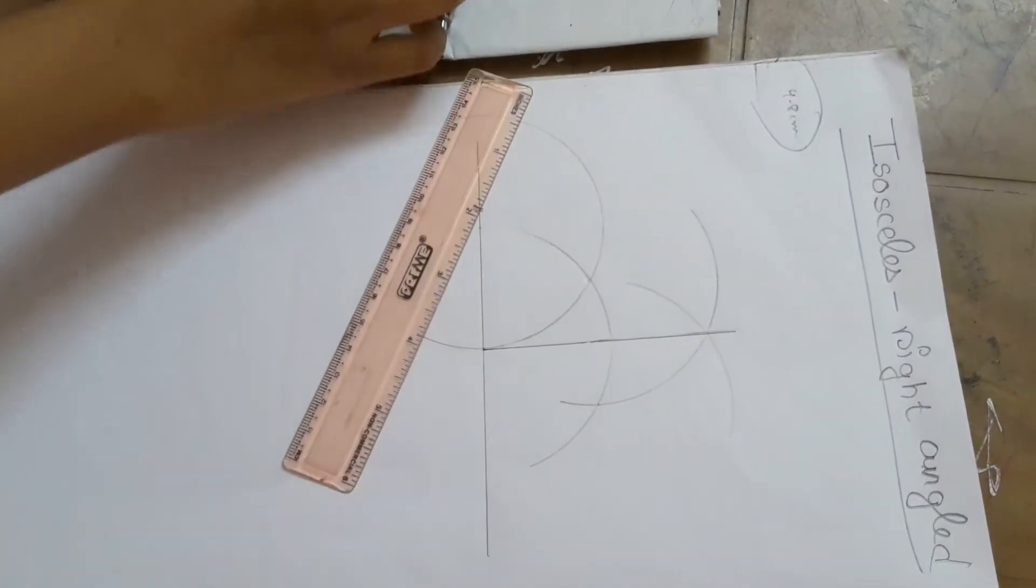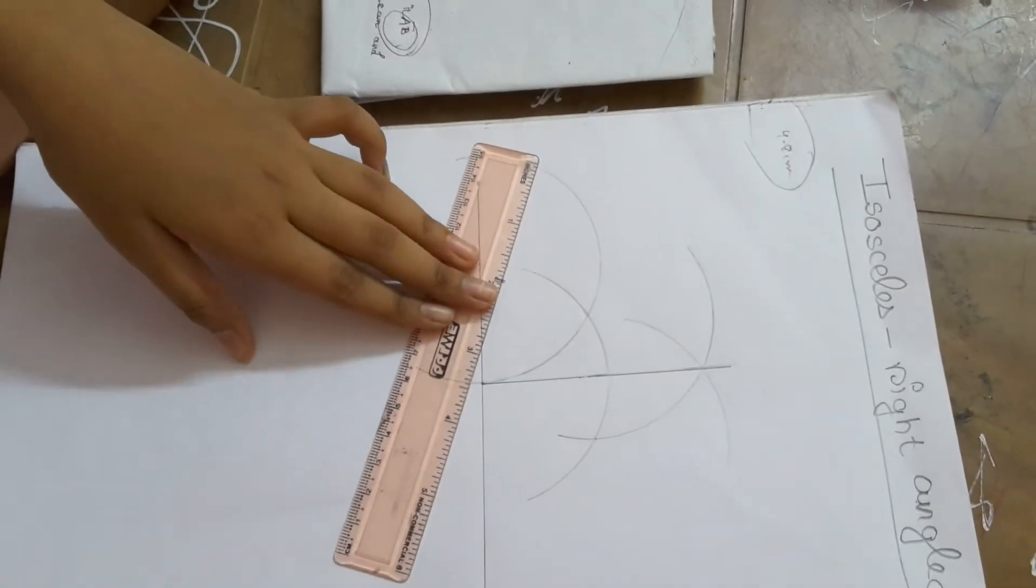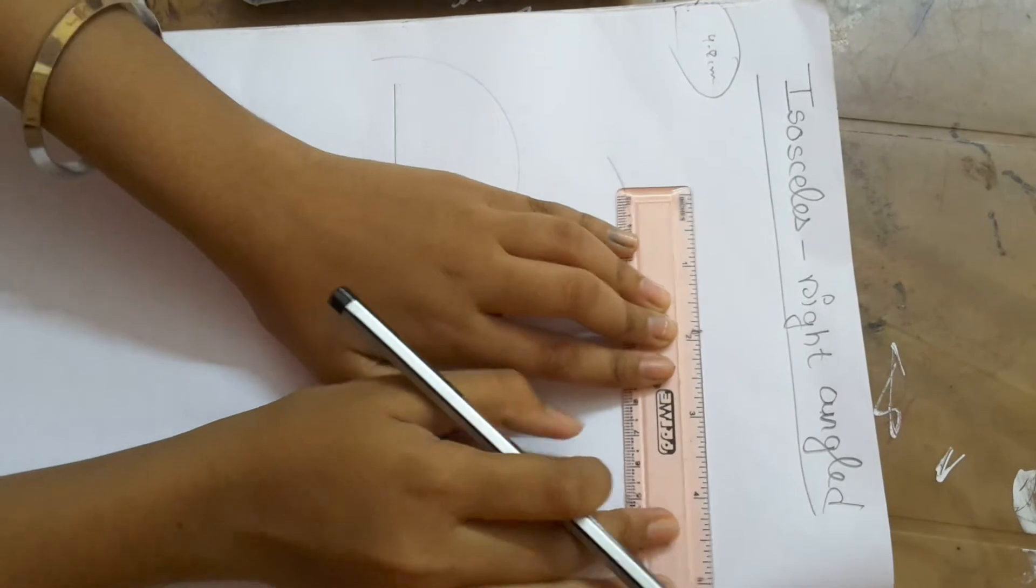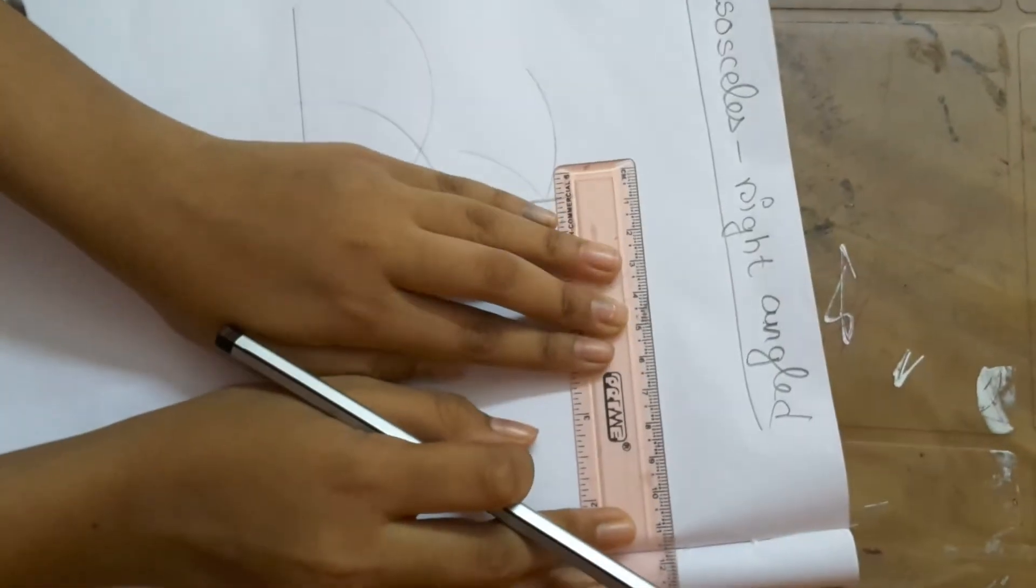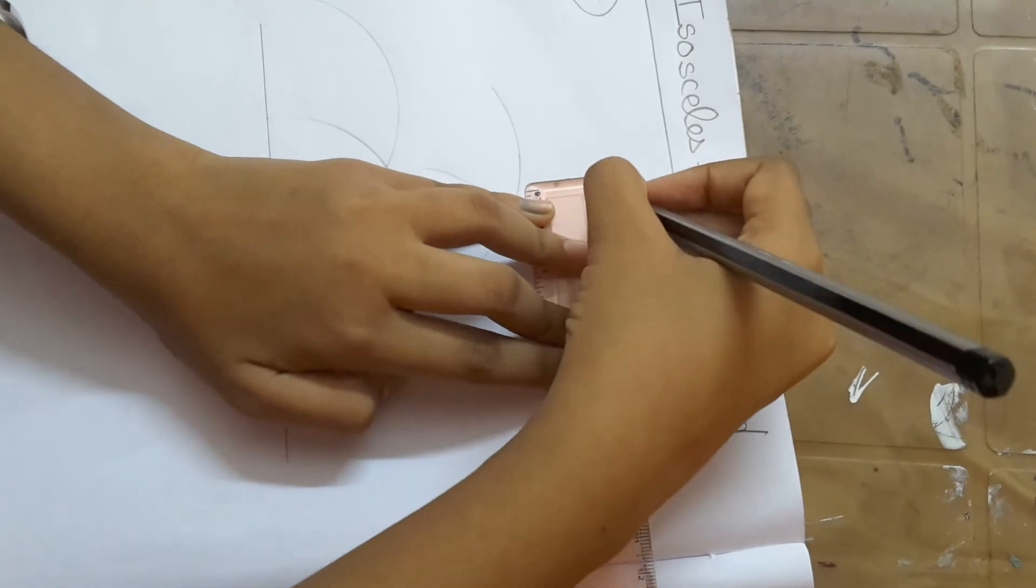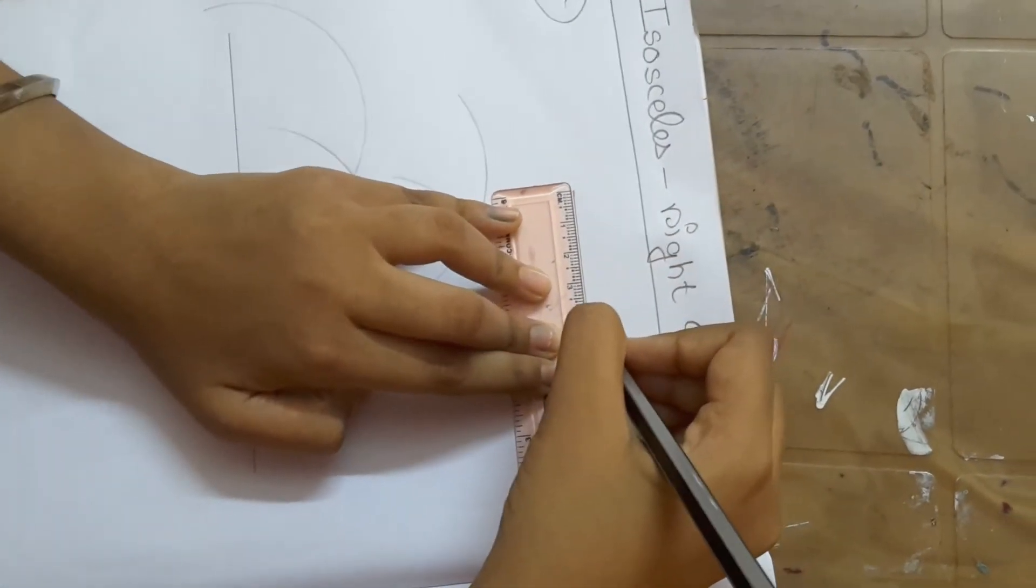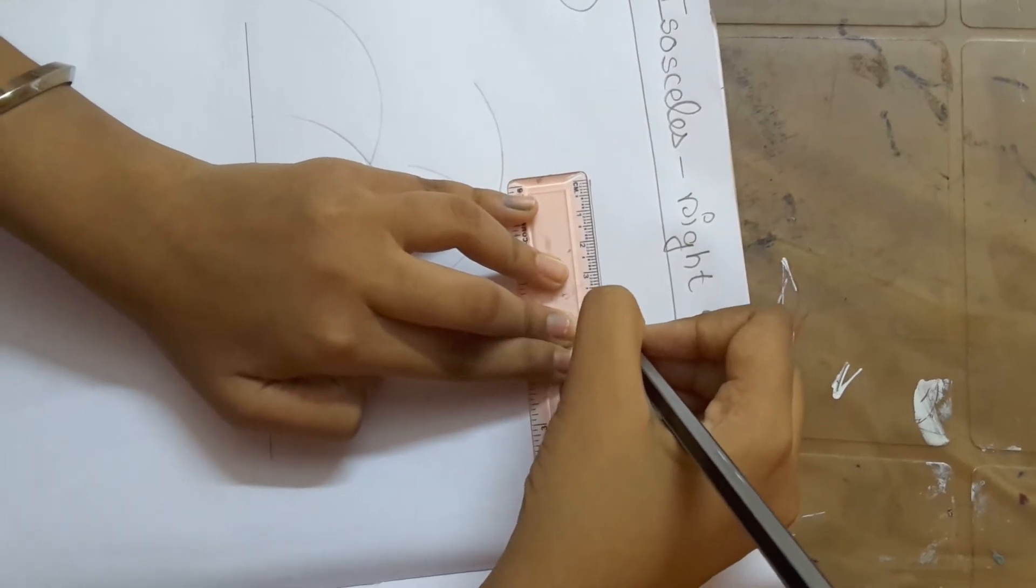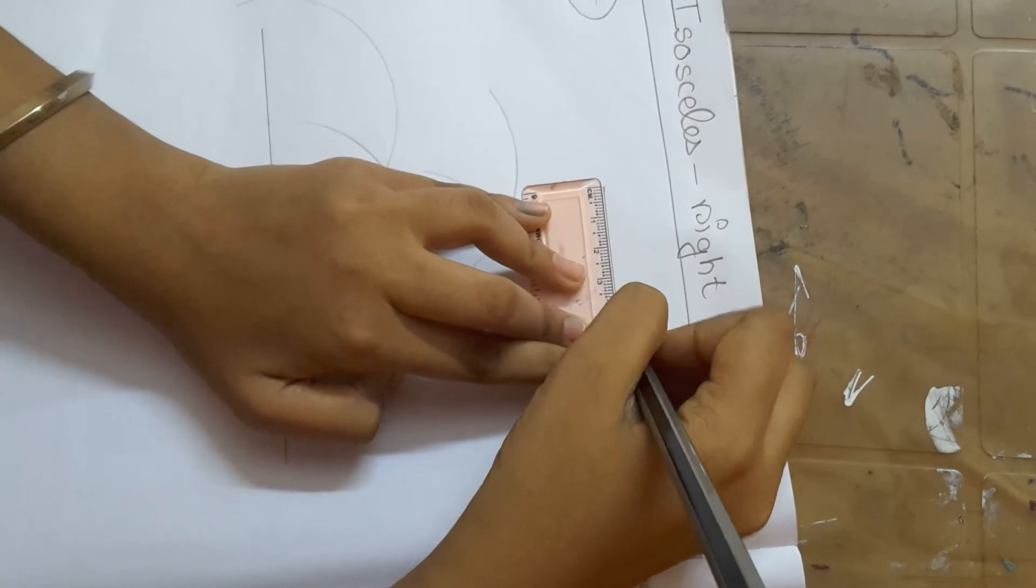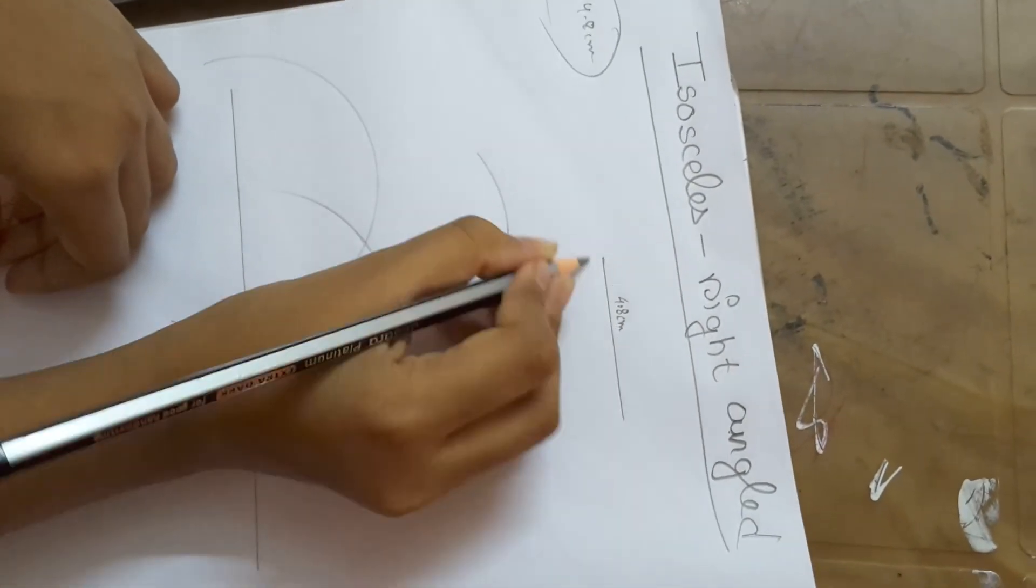Now take a 4.8 cm line. It's a 4.8 cm line.